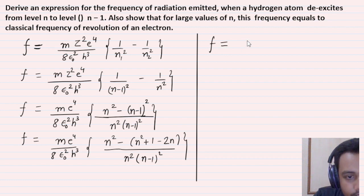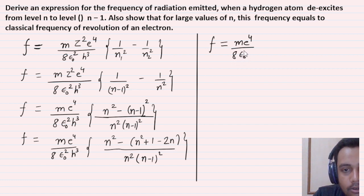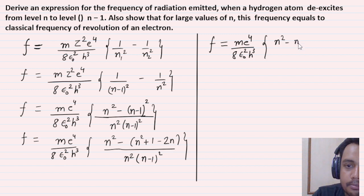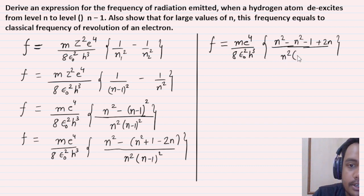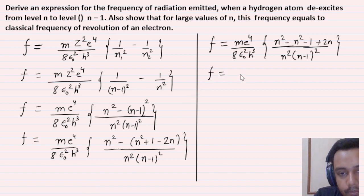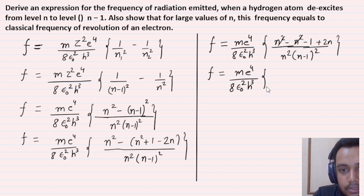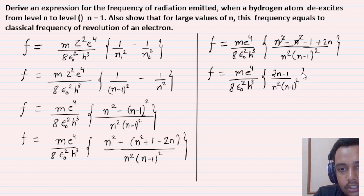So frequency f = me⁴ / (8ε₀²h³) × [N² − (N² − 2N + 1)] / [N² × (N-1)²]. Opening the bracket: N² − N² + 2N − 1 = 2N − 1. The N² cancels. So the formula becomes: f = me⁴ / (8ε₀²h³) × (2N−1) / [N²(N−1)²].